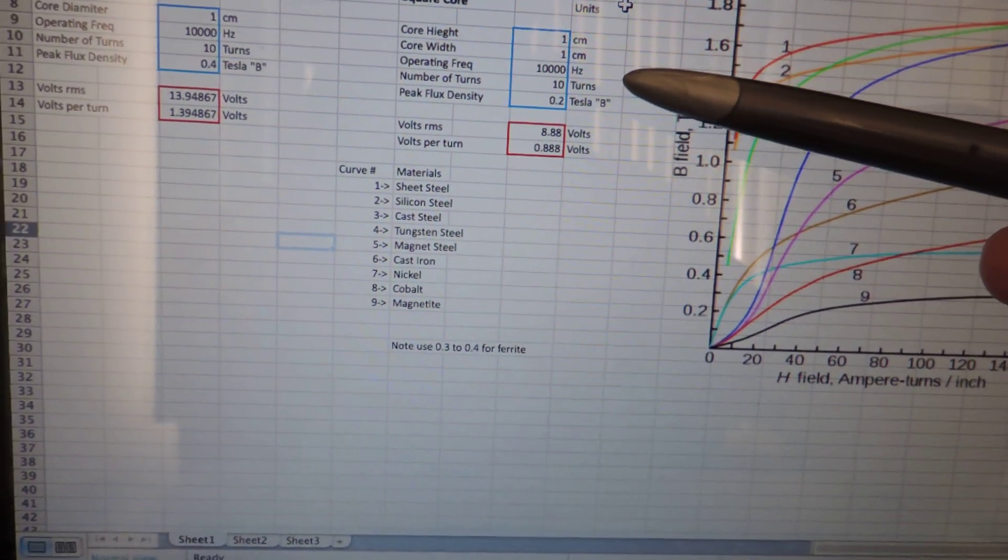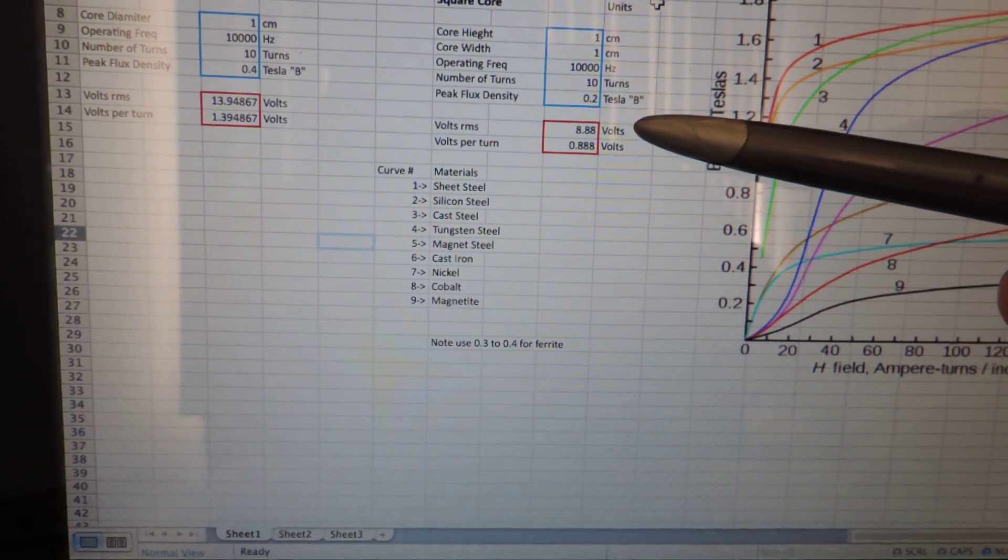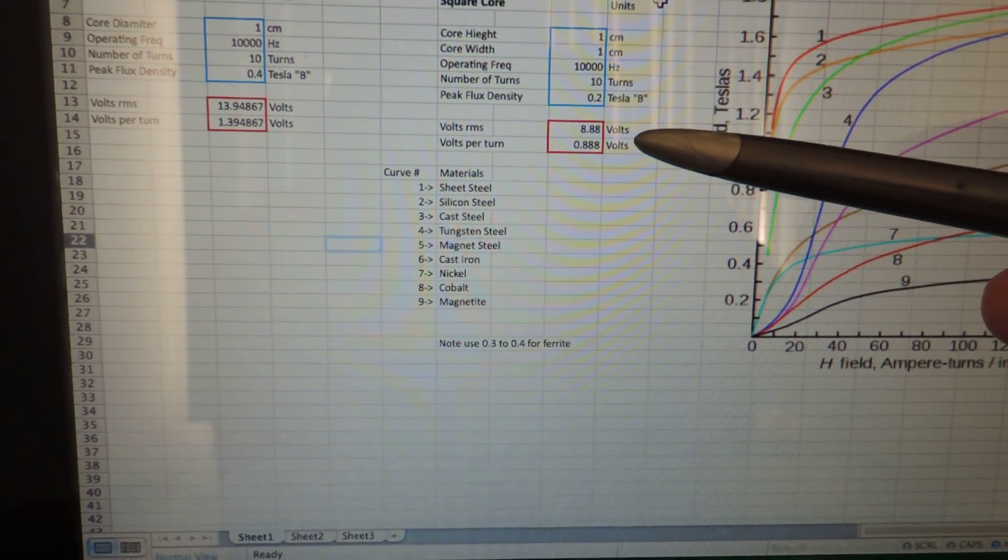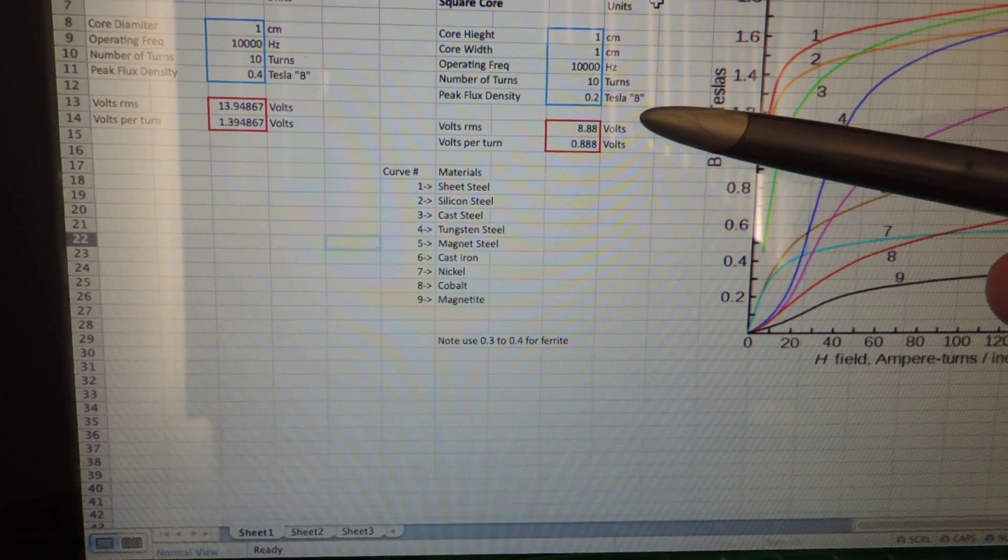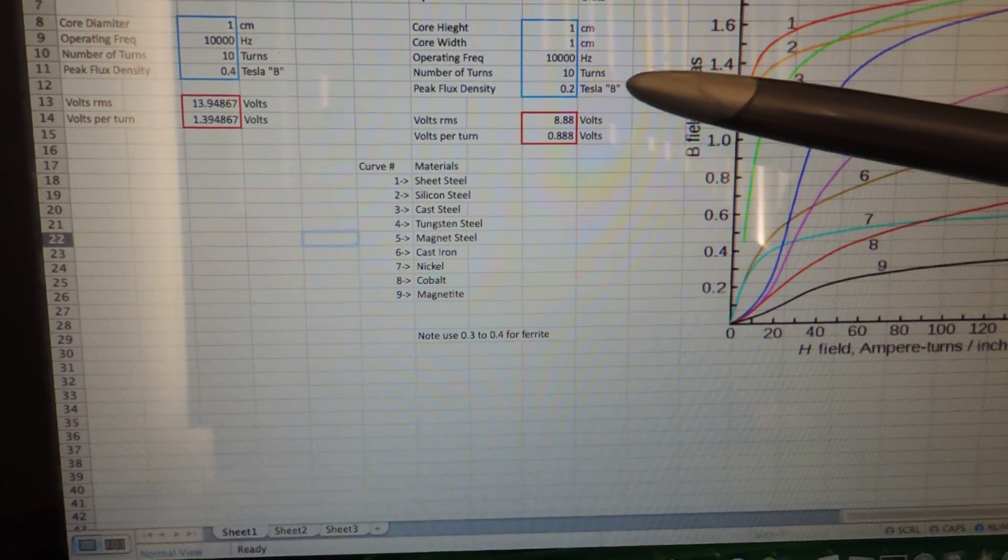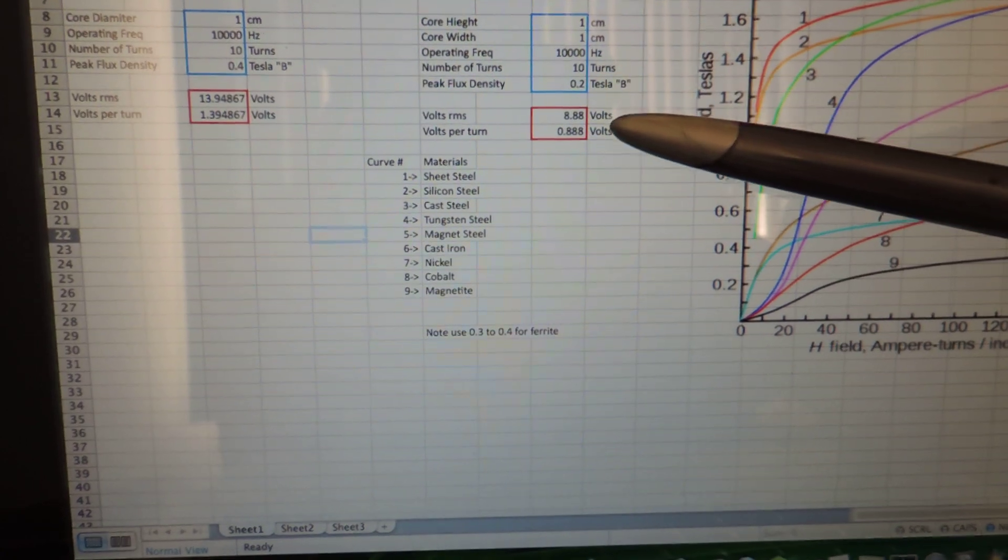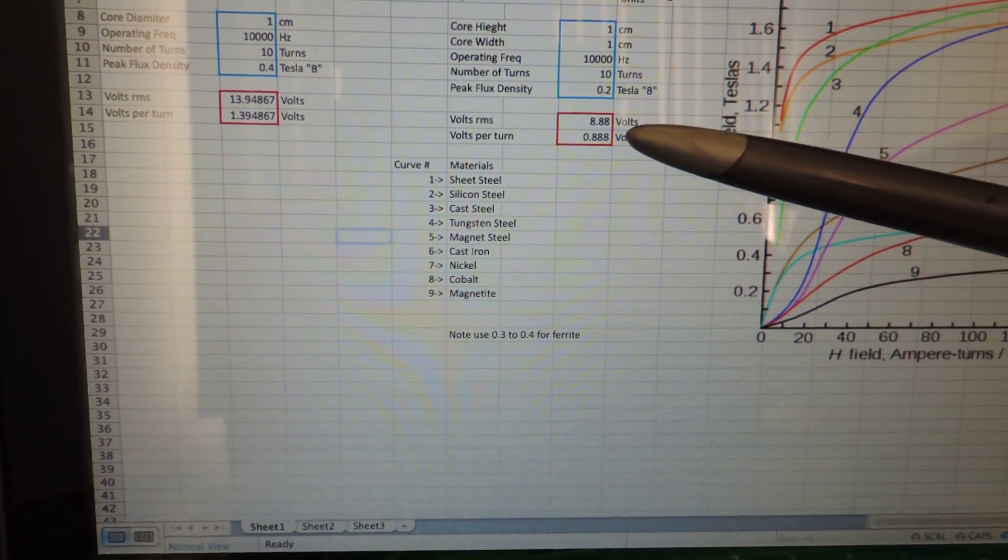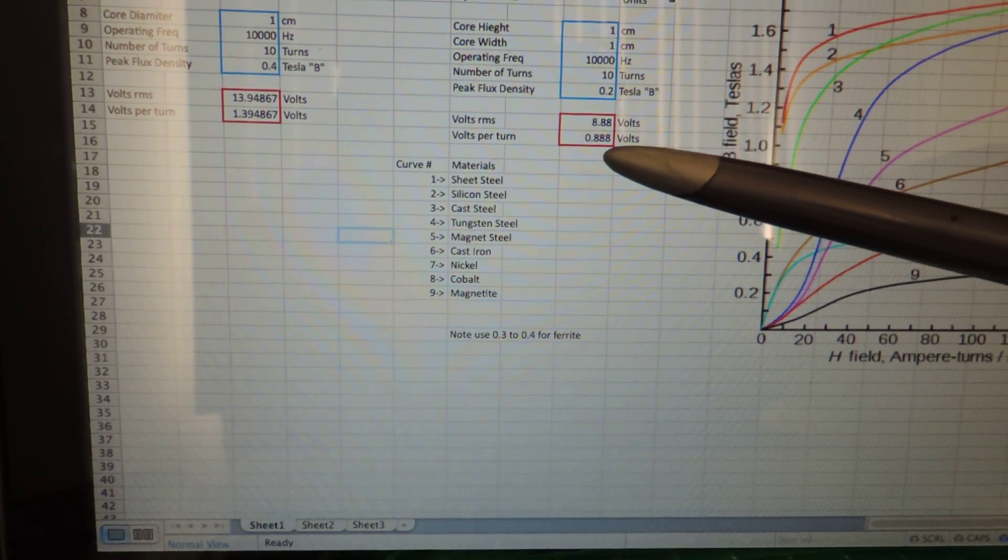In this particular example, we're using 0.2 tesla. And you can see here, it gives us a voltage RMS of 8.8 volts. This is the maximum amount of voltage we can apply to 10 turns on that type of core, before it saturates it. And you can see here, you can divide that number by the number of turns, and you can get voltage per turn as well. In that case, it's 0.88 volts.